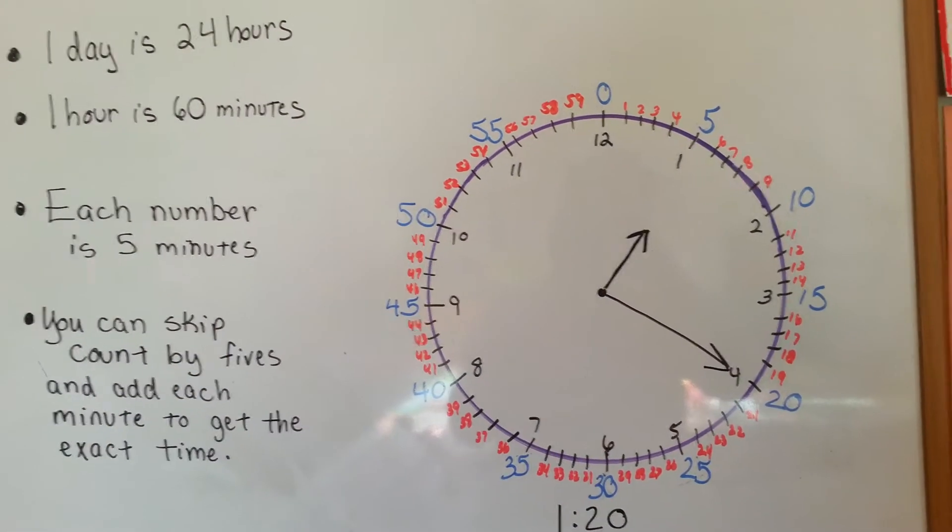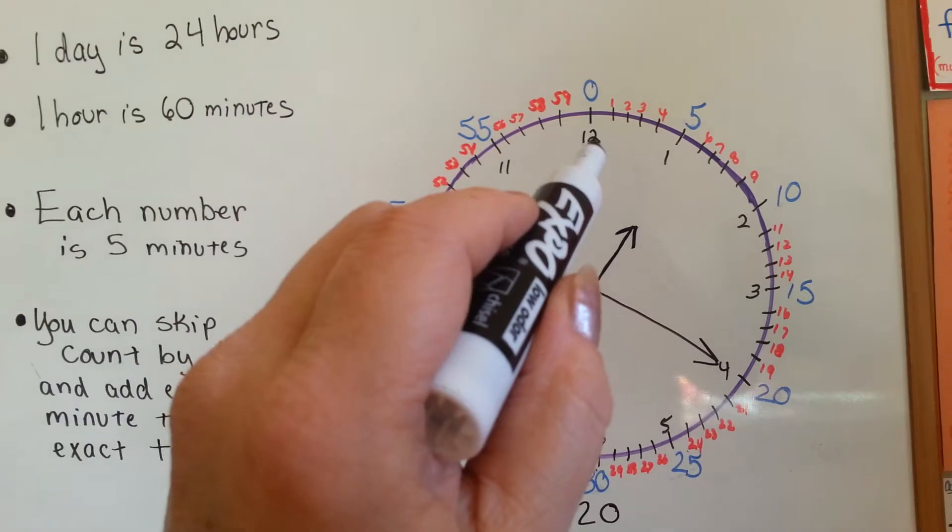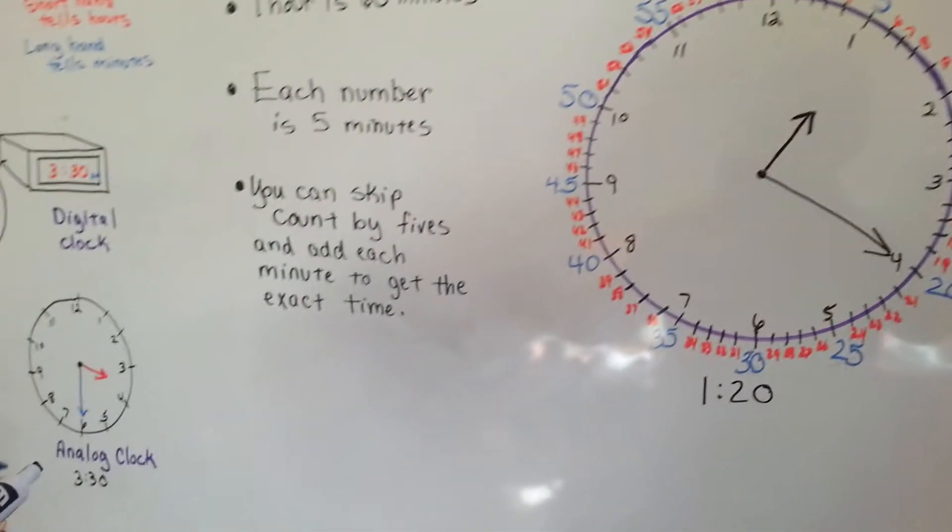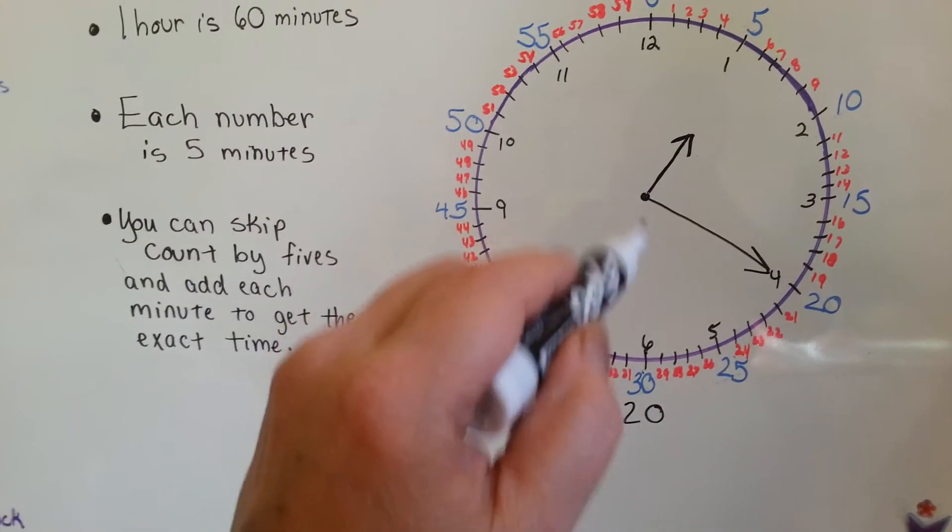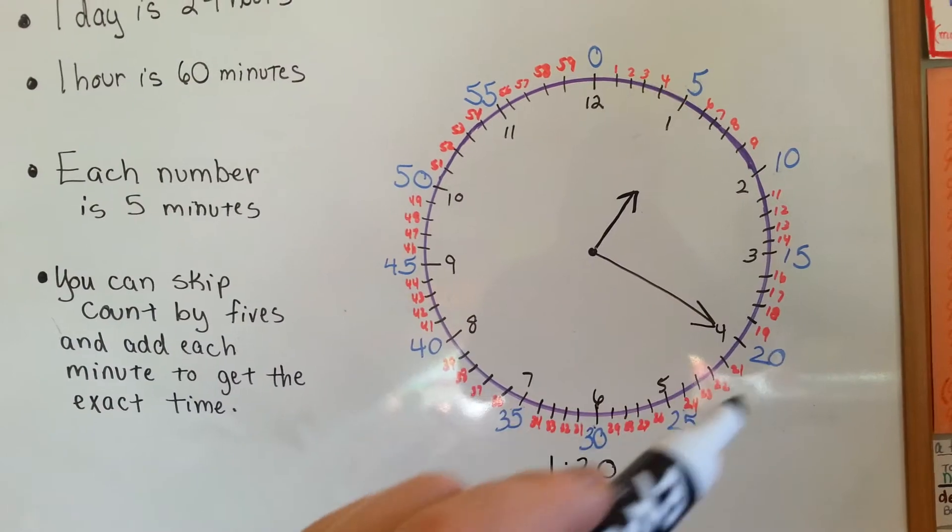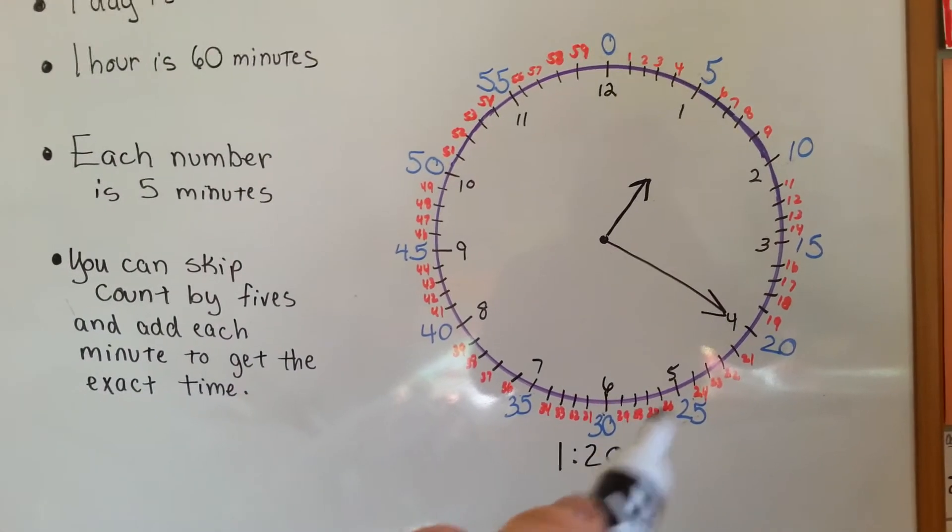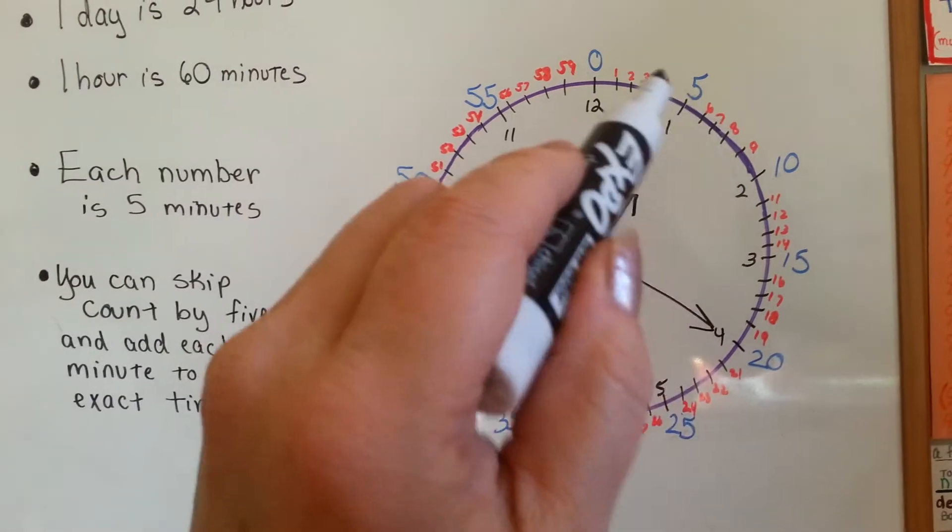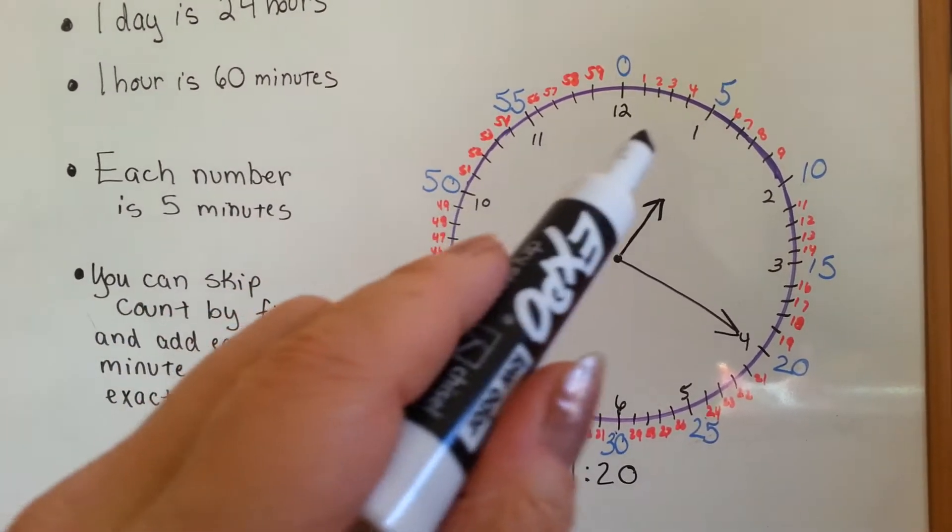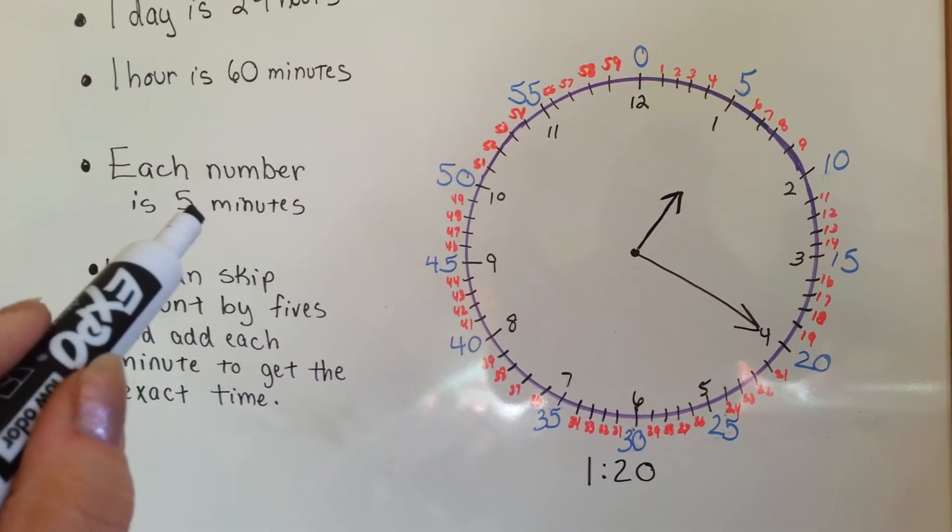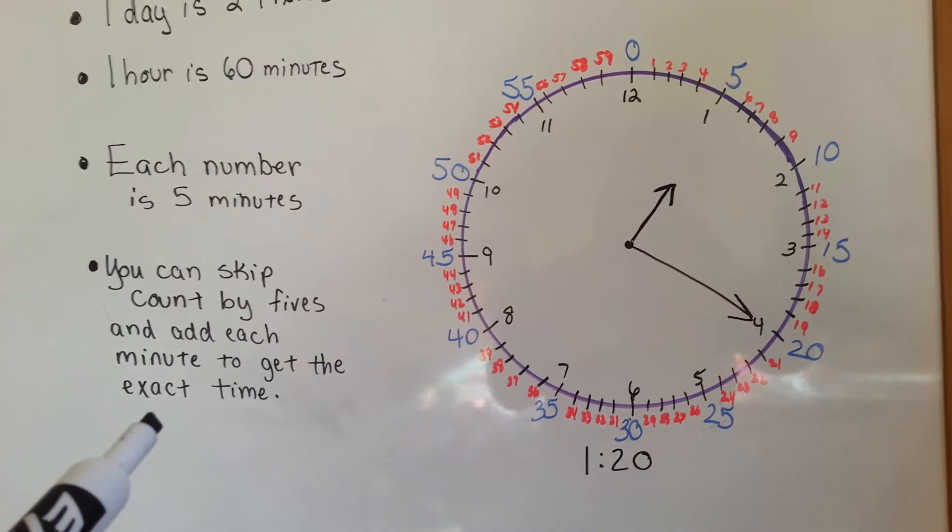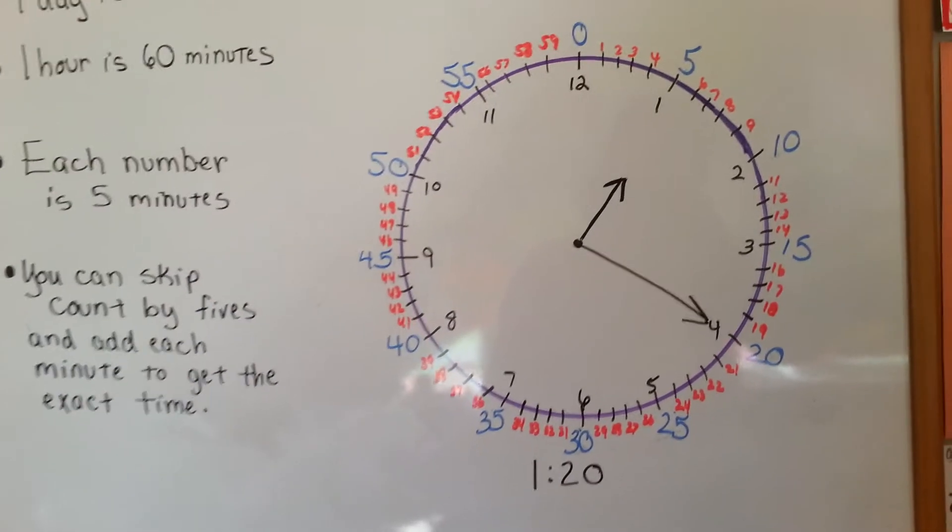You can see on the clock I've drawn, the 12 is 0. And then here's the 30. Like we did over here, it was 3:30. Because you skip count 5, 10, 15, 20, 25, 30. But there's little minutes in between all the 5s that we skip counted. So, each of these big numbers, 1 through 12, stands for 5 minutes. And you can skip count by 5s and then add each minute to get the exact time.